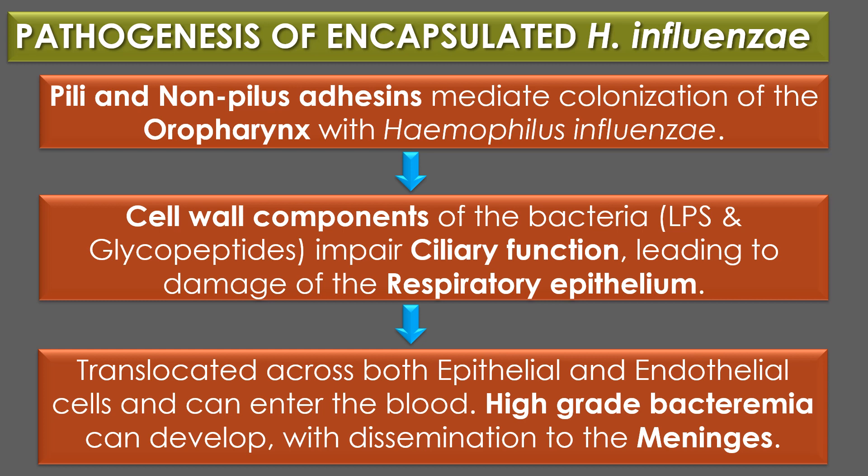Pathogenesis of encapsulated Haemophilus influenzae: encapsulated Haemophilus influenzae, particularly serotype B and biotype 1, is uncommon in the upper respiratory tract but is a common cause of disease in unvaccinated children, resulting in meningitis, epiglottitis, and cellulitis. Pili and nonpilus adhesins mediate colonization; lipopolysaccharides and low molecular weight glycopeptides impair ciliary function, damaging the respiratory epithelium. The bacteria can then translocate across epithelial and endothelial cells, enter the blood, and high-grade bacteremia can develop with dissemination to the meninges.